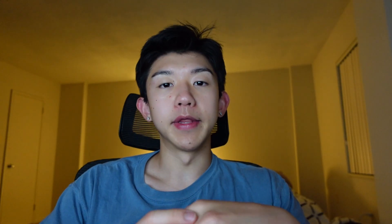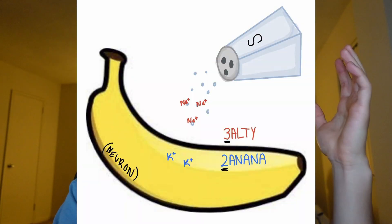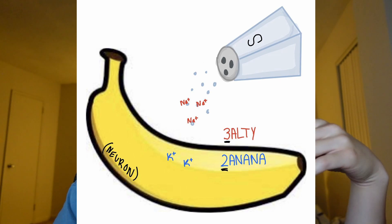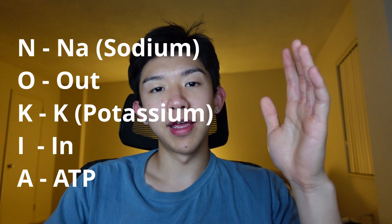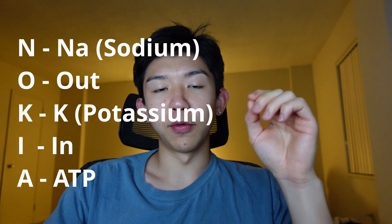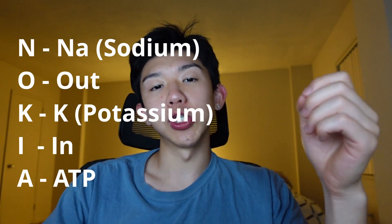At number one, I have the mnemonic 'salty banana' or 'Nokia,' and this is for the sodium-potassium pump used for action potentials. For the salty banana reference, you're pouring salt on the banana — you have salt on the outside, or sodium, and then you have potassium, or the banana, on the inside. Another mnemonic is Nokia: N-O stands for sodium out, K-I stands for potassium in, and the last A stands for the ATP that's used when the protein does the swapping of the sodium and the potassium.